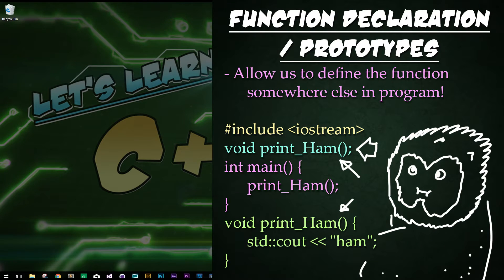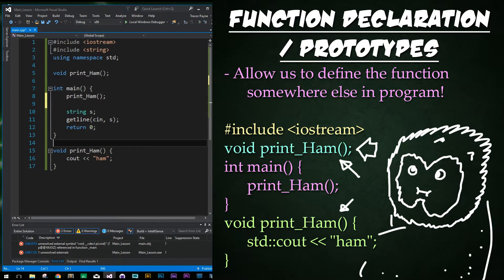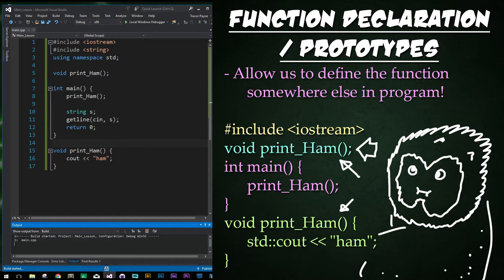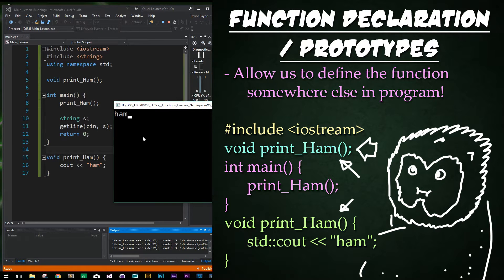Based on what we know right now, our functions must come before the main function; otherwise the program won't compile. It does not have to be this way, however. Instead we can use function declarations or function prototypes and define our functions elsewhere. The declarations are the interface and the definitions are the implementations. Here's a slim example: we have our function prototype saying we're going to define this somewhere else in the program, then we have our function call in the main function, and then we define it down below the main program and everything compiles just fine. If we run it, it will indeed just print ham.